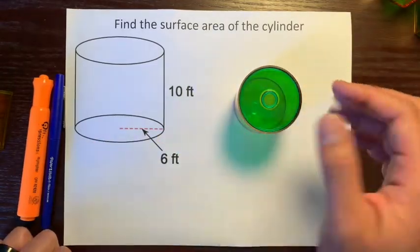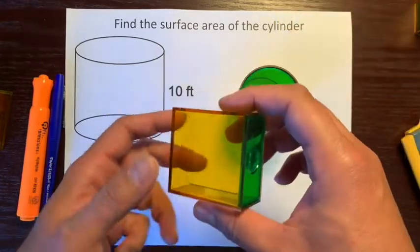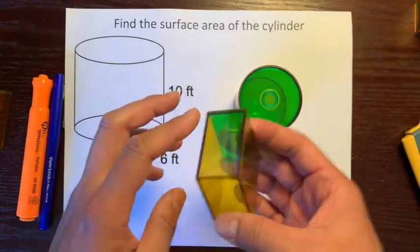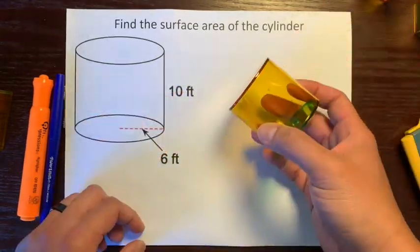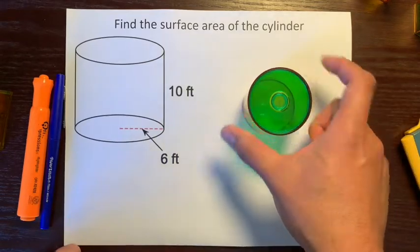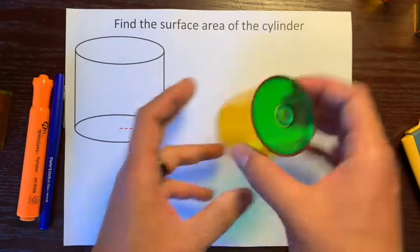The only reason this is not considered a prism is because a prism has all edges as straight line segments. Here there's some curves, a lot of curves, so this is not a prism, it's a cylinder, because its two bases are circles.